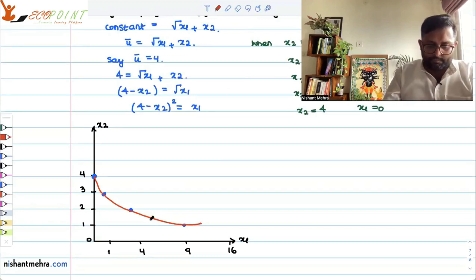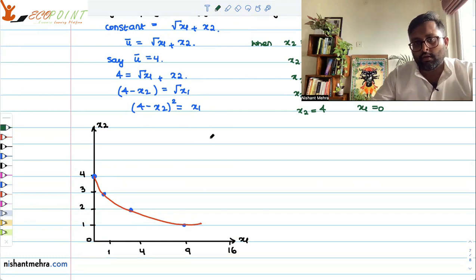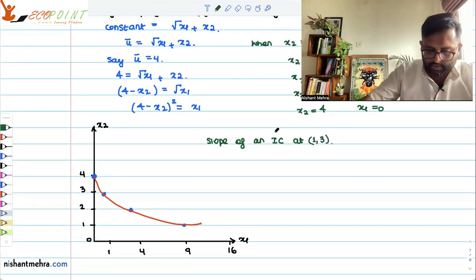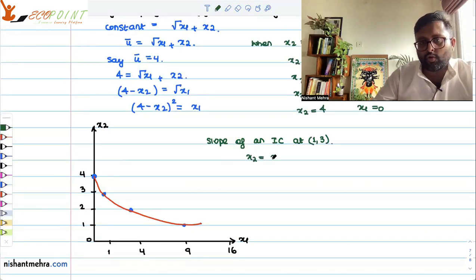And the other thing is if you find out the MRS, your question also says this: what is going to be your slope of the indifference curve at (1,3)? You have these kind of preferences, x2 is equal to constant minus root of x1.